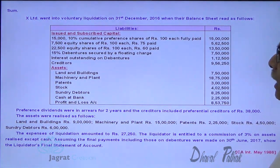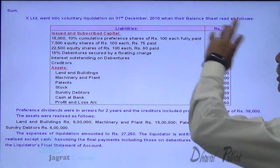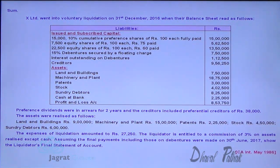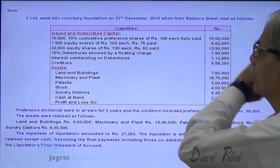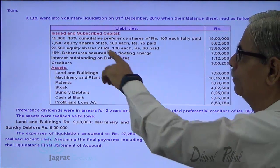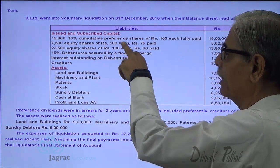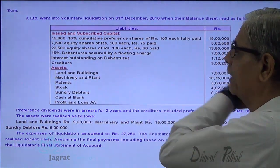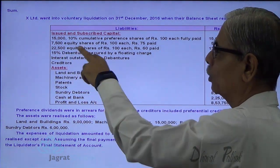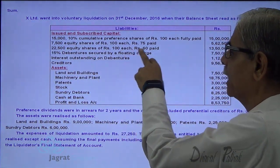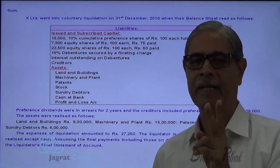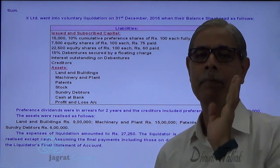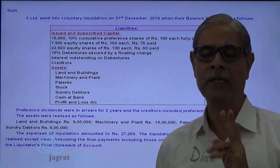Axe Limited went into voluntary liquidation on 31st of December 2016, when the balance sheet read as follows. Issued and subscribed capital: cumulative preference shares 15 lakhs; 7,500 equity shares of face value 100, 75% paid up; 22,000 equity shares of face value 100, 60% paid up. Both shares have the same face value of 100, but the paid-up amount is different — that's an important point.